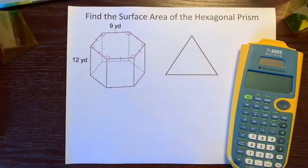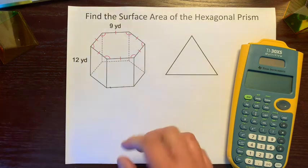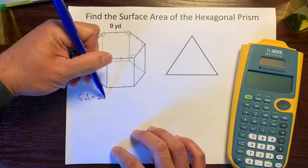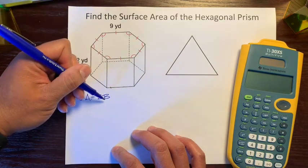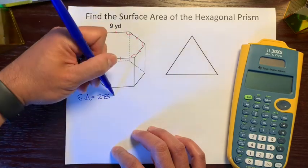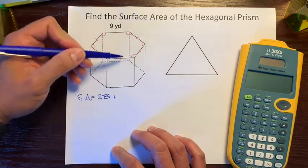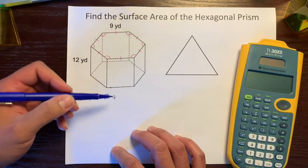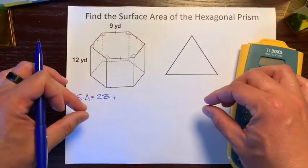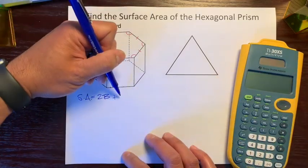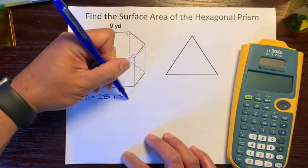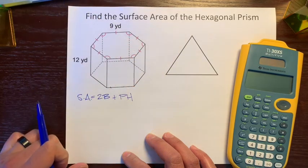So let's think back — what's the formula for surface area of a prism? Surface area is 2B plus Ph. B represents base area, and since there are two bases we multiply by 2. Then we add the lateral area — all the faces in between. If we unwrapped all those faces they'd form a rectangle, and its area is the base perimeter P times the height h, the distance between the two bases.